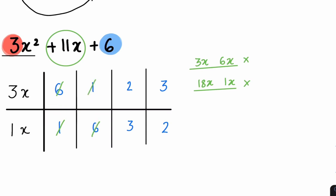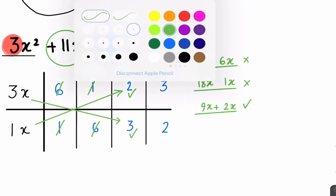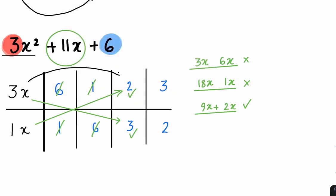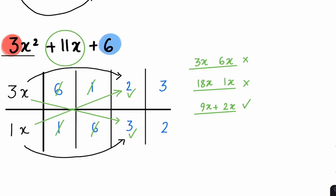Go to the third column. 3x multiplied by 3 is 9x, and 1x multiplied by 2 is 2x. Can we add or subtract these terms to make 11x? Yes, we can add them. Therefore, this column works and your final answer will be 3x plus 2 and x plus 3. If you want to check your answer in an exam, all you have to do is expand this double bracket. There's a video on my channel already explaining how to do that.